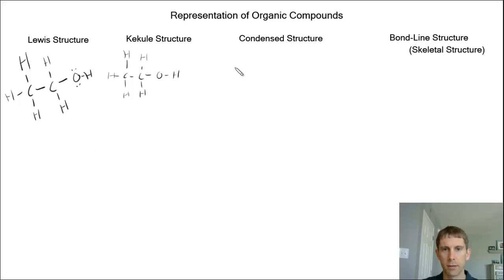For the condensed structure, that takes a little bit less time. We've got CH3. So with our terminal methyl group, we've got CH3, which is connected to CH2, which is connected to an alcohol functional group or an OH group.